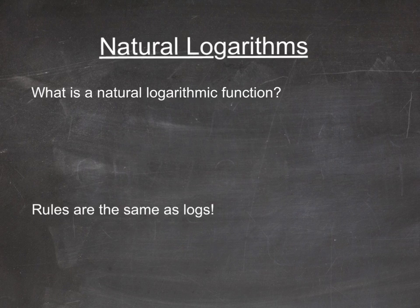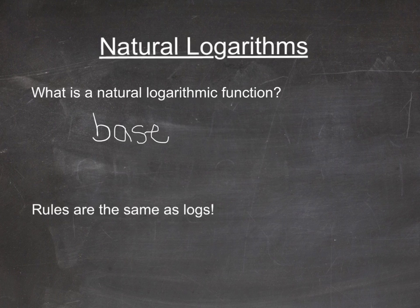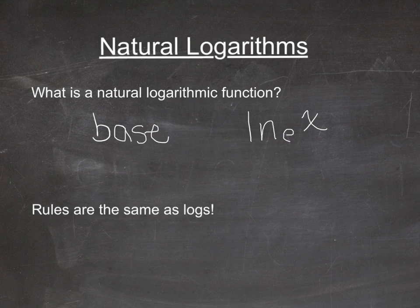This video is about natural logarithms. A natural logarithm function is almost the same as a regular logarithmic function. The main difference is that a natural log is base e. Whereas logarithmic functions can use different bases — log base 2, log base 5, log base 10 — a natural logarithm is log base e. So we write it as ln of x, because we know the base is always going to be e.